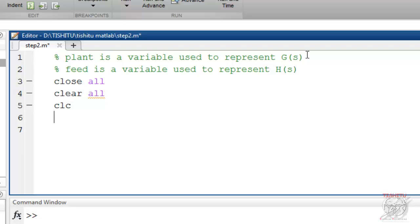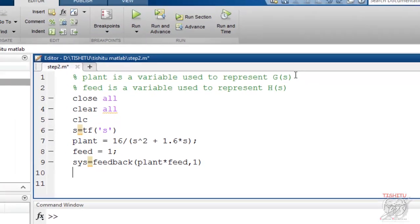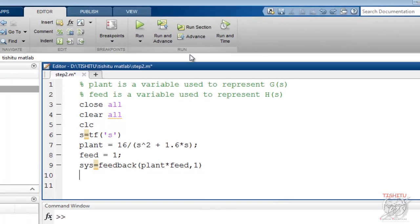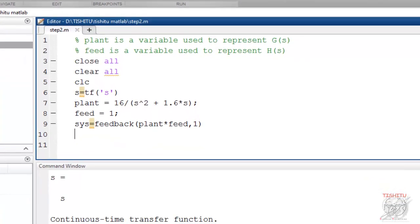Then use tf command as tf in a pair of single inverted comma s variable to initialize s value. Then assign value of G(s) and H(s) in plant and feed name variable as discussed. Then use feedback command to evaluate the transfer function of the system. Now simply run this file and you get output at command window as a value of sys variable.